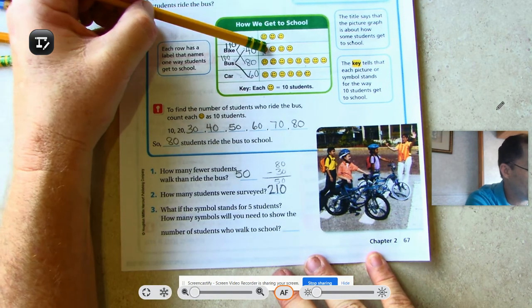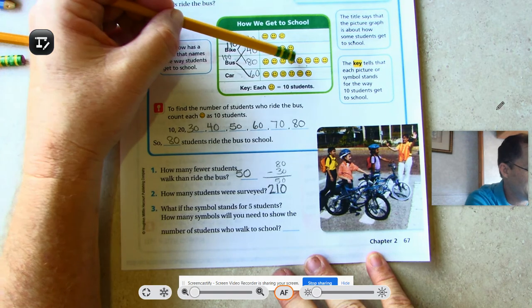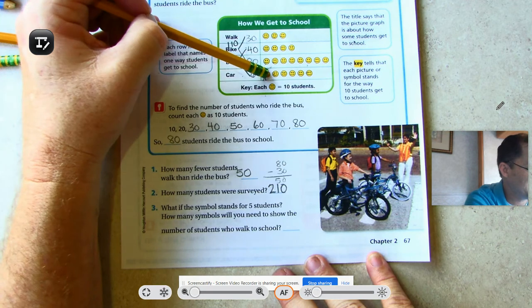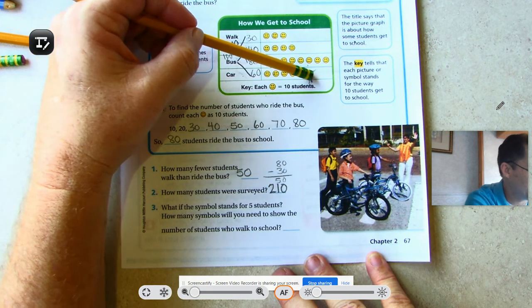10, 20, 30, 40, 50, 60, 70, 80, 90, 100, 110, 120, 130, 140, 150, 160, 170, 180, 190, 200, 210.